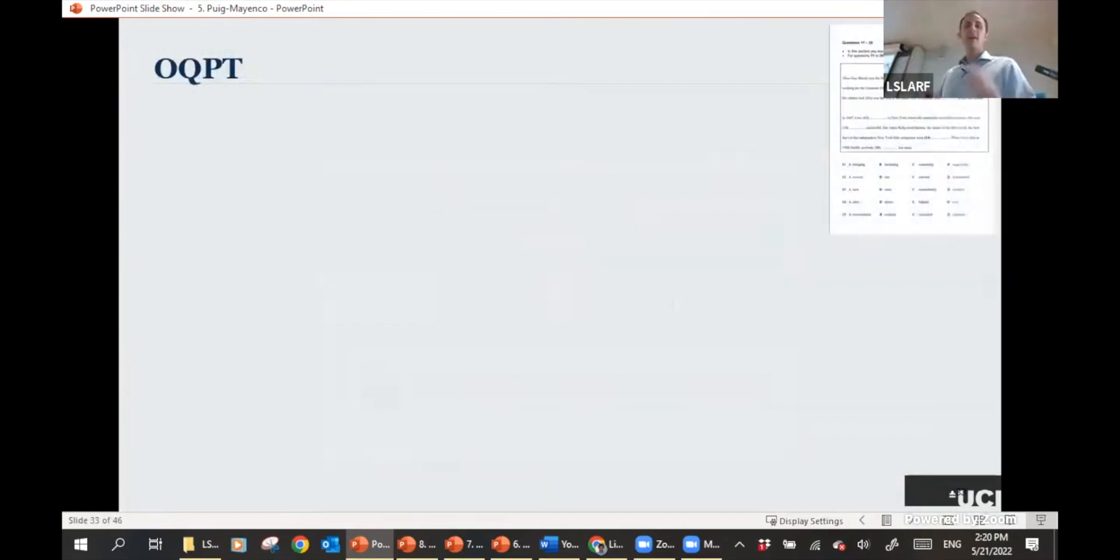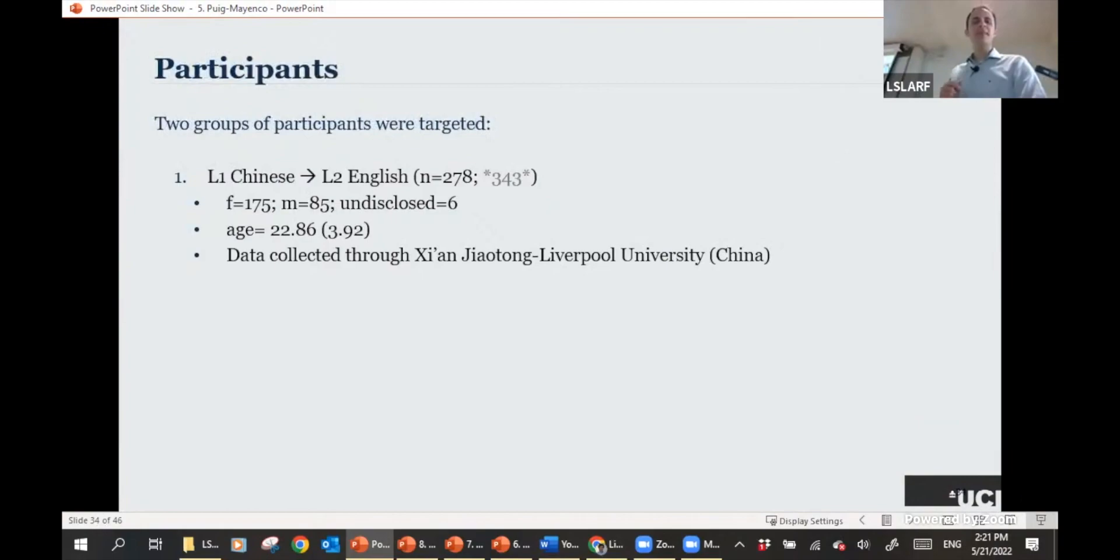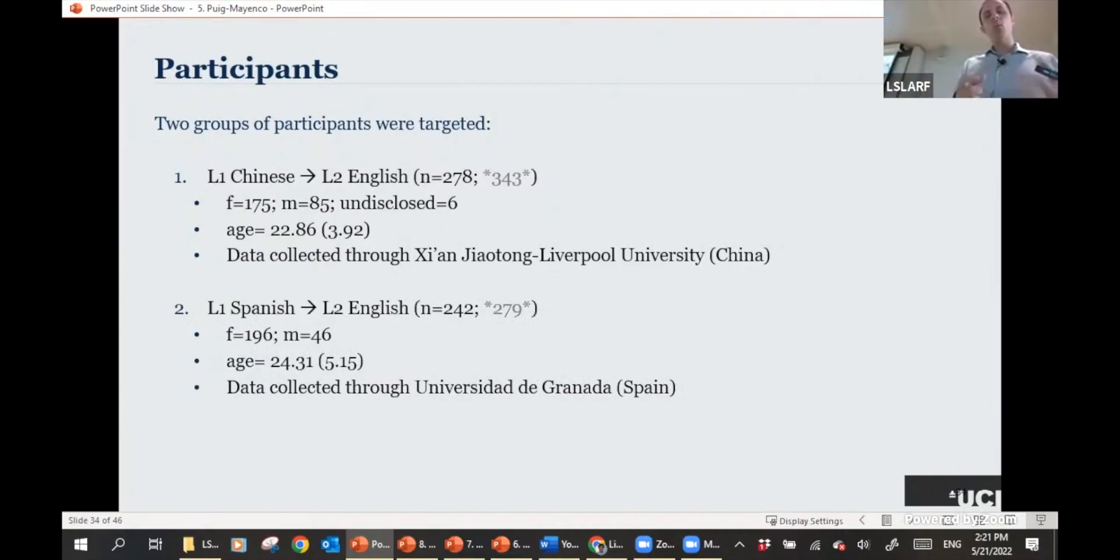We also asked for their self-rated proficiency to explore whether that would actually tell us something. And then they did the Oxford Quick Placement Test. Because it's a standardized test that's been tested over 1,000 participants. It has multiple versions. We adapted the pen and paper one onto a web-based format that was done through Ibex Farm and Qualtrics. It's got 60 multiple-choice questions. And crucially and importantly for us, it's got a standardized scoring procedure against the CEFR that would allow us to actually classify our participants into whether they were advanced or intermediate learners. We targeted two groups of participants, L1 Chinese, L2 English. We started off with 343 participants for the Chinese group, though I will only present data from 278 because we excluded beginners. And then we had L1 Spanish, L2 English speakers. We ended up including 242 participants.